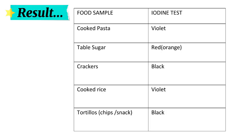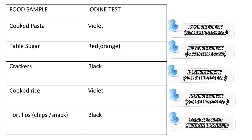In summary, the cooked pasta, cooked rice, cracker, and the tortilla chips have a positive test, which means that starch is present. Meanwhile, the table sugar has a negative test, which means that starch is absent.